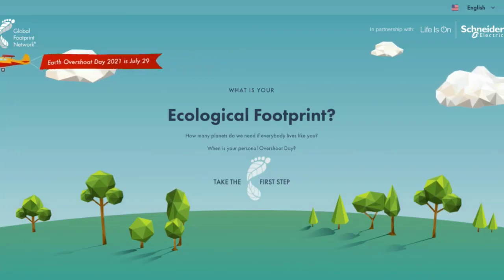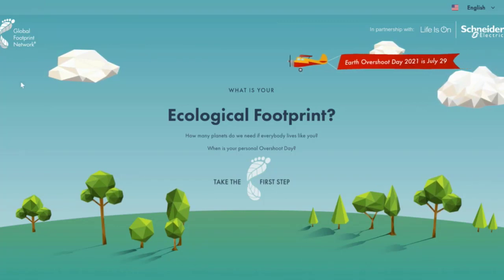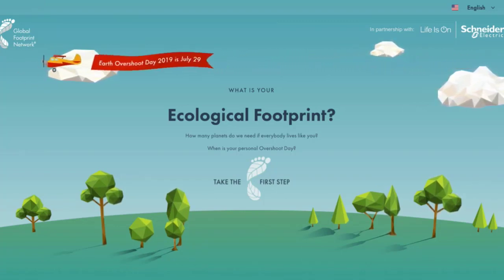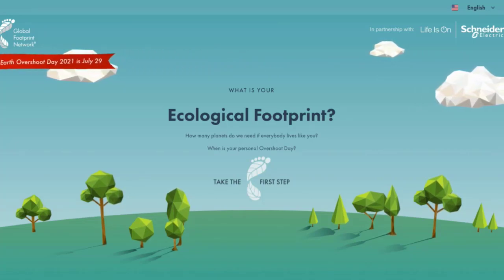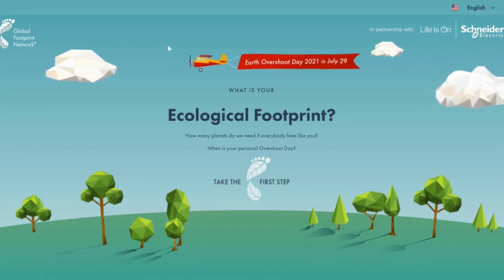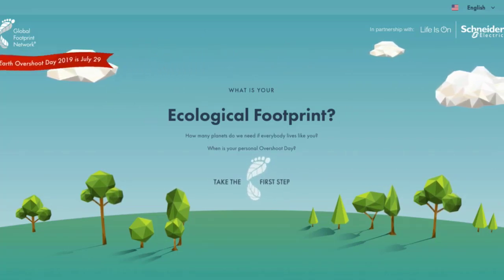Today we're using the Ecological Footprint Calculator, which you can find at footprintcalculator.org. This is a tool from the internationally recognized Global Footprint Network. Their aim is to help end ecological overshoot by making ecological limits — how we're currently using too many resources and creating too much waste — central to decision making for people, business and governments. As you can see up the top, our Earth Overshoot Day for 2021 was July 29.